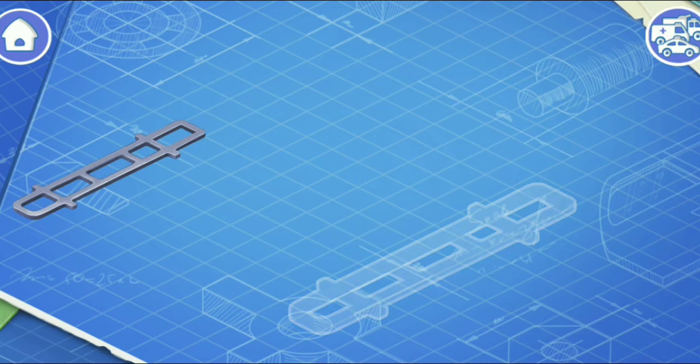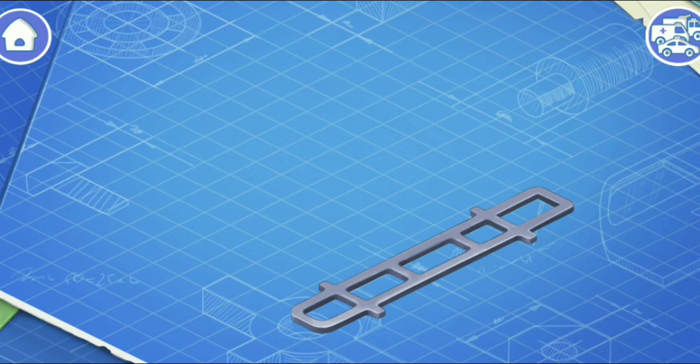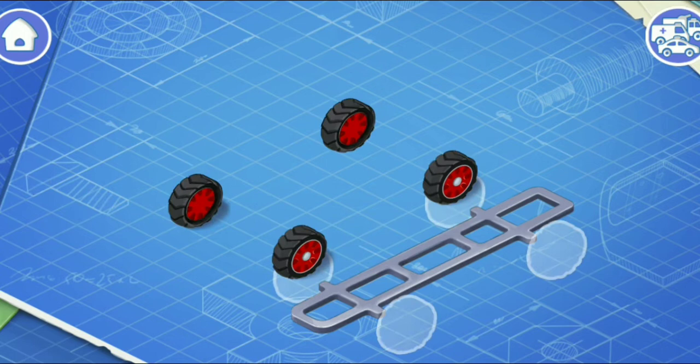Let's learn the construction of an ambulance and assemble it. First, let's install a frame. This is the basic part of a car. The frame carries all the other parts.